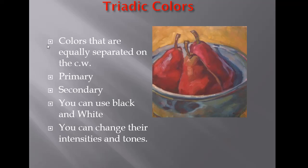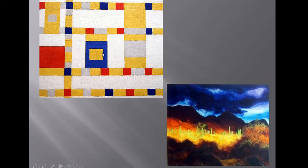For example, starting at yellow-orange, count four spaces to blue-green, count four more and land on red-violet — those are triadic colors. Artist Mondrian used pure primary triad colors, playing with composition and repetition. He loved these pure colors because they weren't made by mixing anything — the purest of all colors, given as-is. Another artist made a dramatic landscape using values of the reds, yellows, and blues in a triadic color scheme.